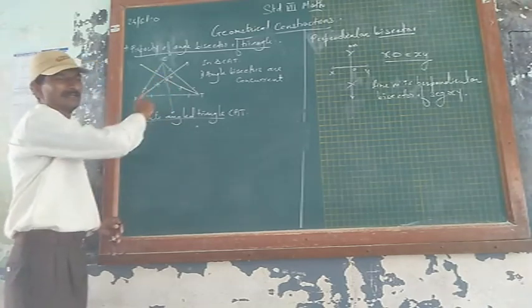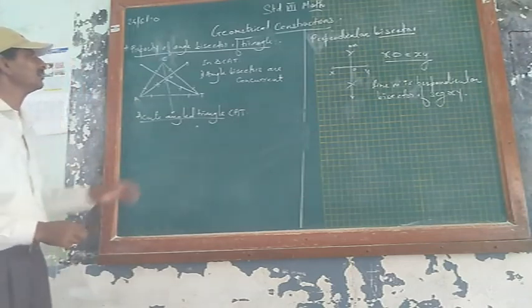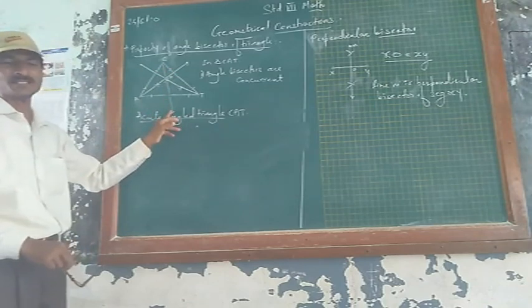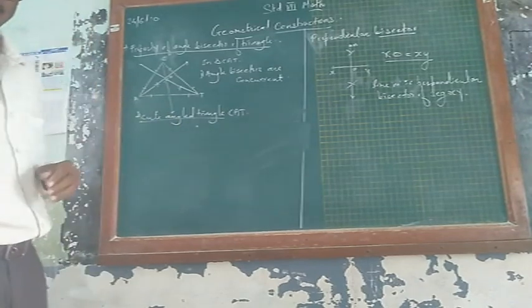And the point of intersection of these 3 angle bisectors is called as in-center.